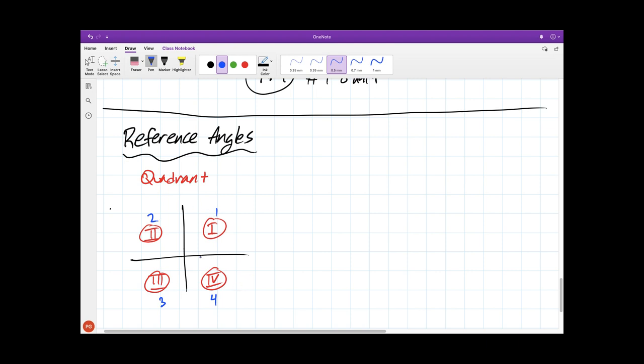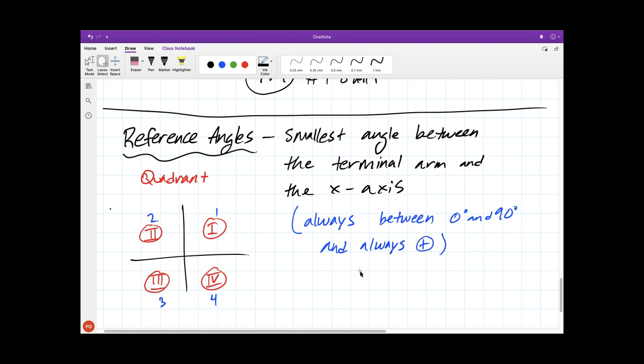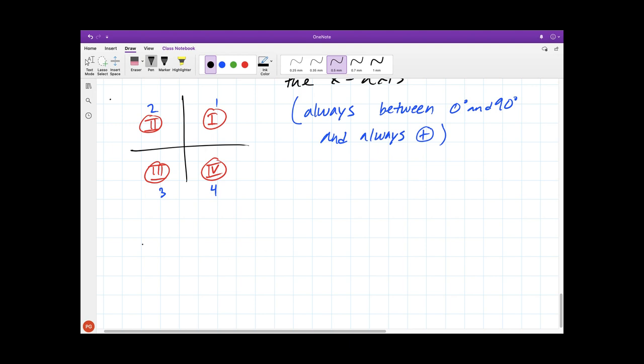This is going to be really helpful when we're talking about reference angles. A reference angle is the smallest angle between the terminal arm and the x-axis. These reference angles will always be between 0 degrees and 90 degrees, and we define them as being positive. It might be a little bit hard to imagine what these look like. Let's do some examples together.